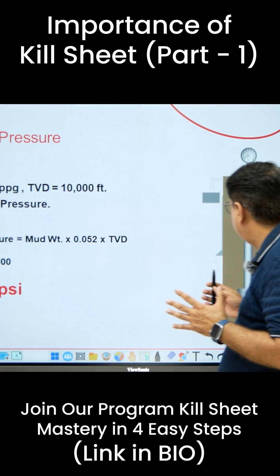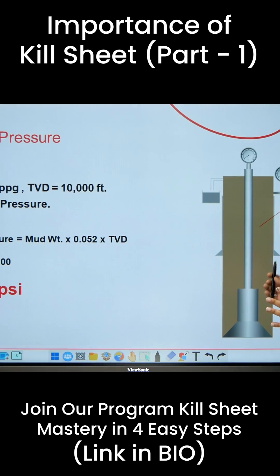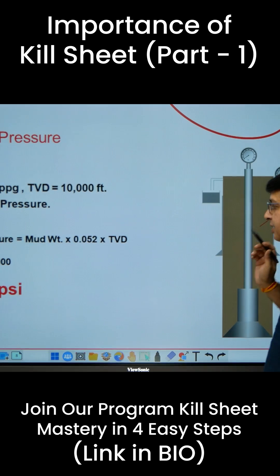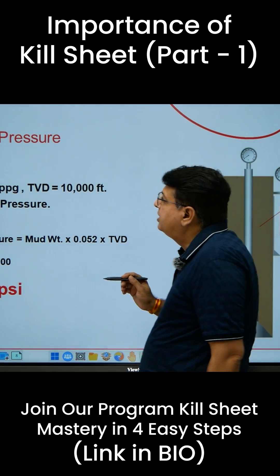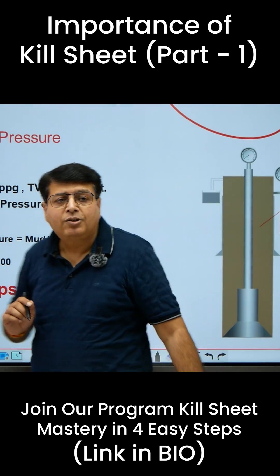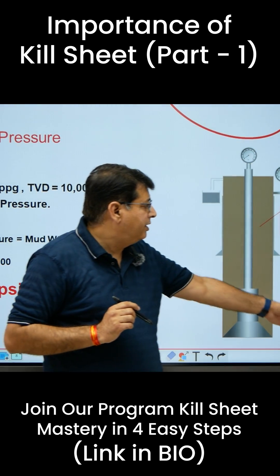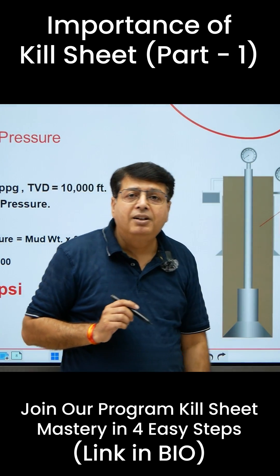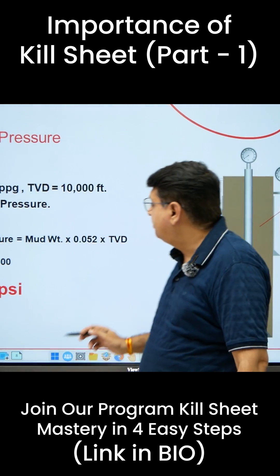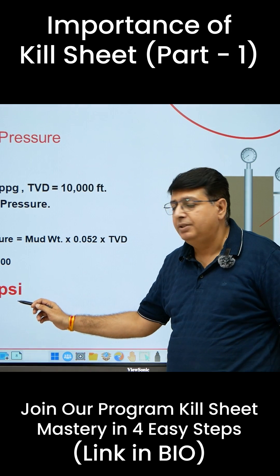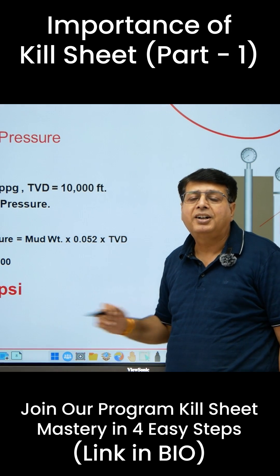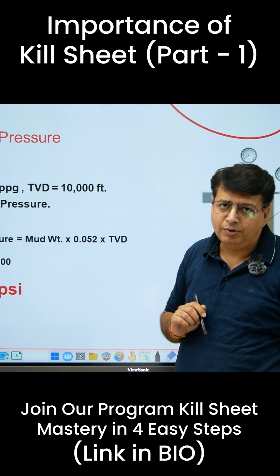As shown here, hydrostatic pressure exerted by a 10 ppg mud with 10,000 feet of TVD will exert a pressure of 5200 psi, using the hydrostatic pressure formula.